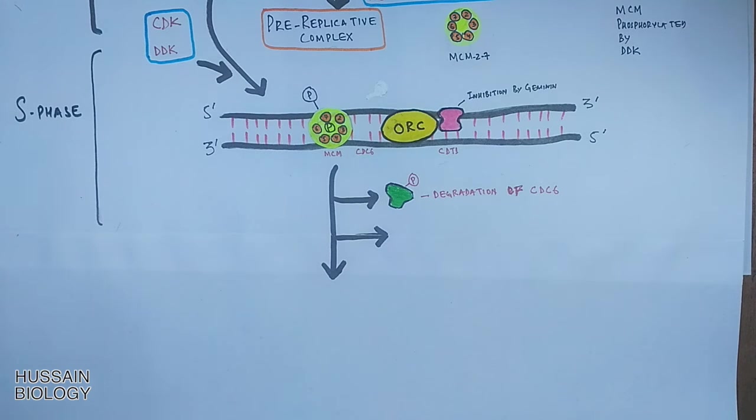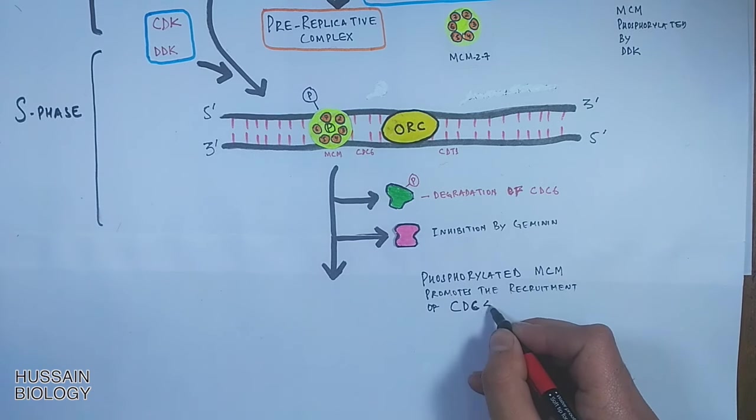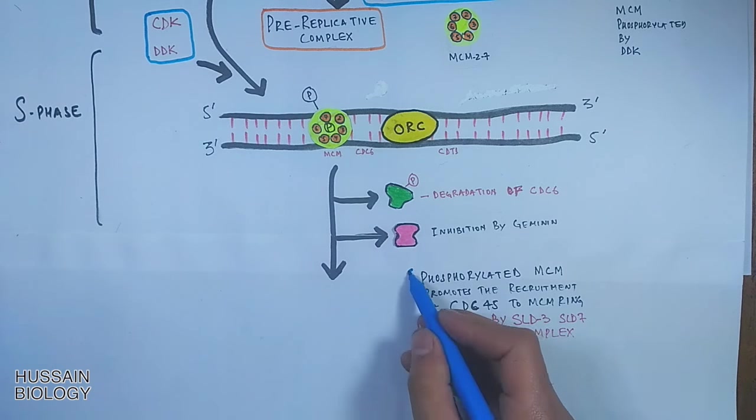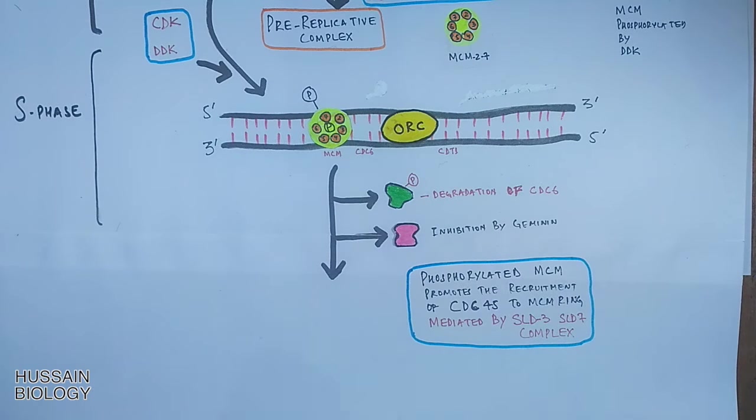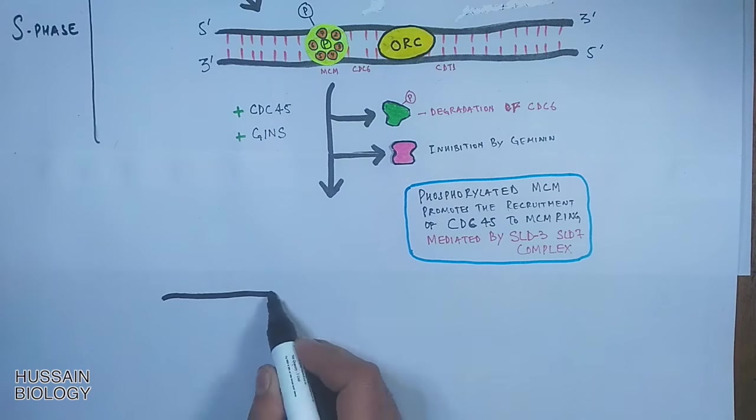Now the phosphorylated cdc6 protein is degraded and cdt1 is also inhibited. And in that process, the phosphorylation of mcm leads to the recruitment of cdc45 and gins proteins. Furthermore we see the cdc45 is loaded to mcm with the help of sld3 sld7 complex.